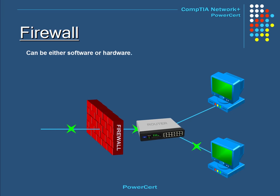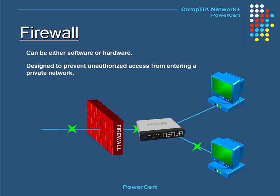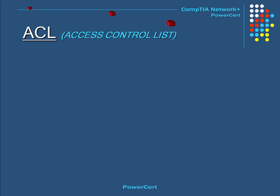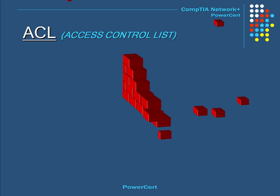A firewall can be either software or hardware. It is a system designed to prevent unauthorized access from entering a private network by filtering information that comes in from the internet. It blocks unwanted traffic and permits wanted traffic. It filters incoming network data packets and determines by its access rules if they are allowed to enter the network. In today's high-tech world, a firewall is essential to every business to keep their network safe.